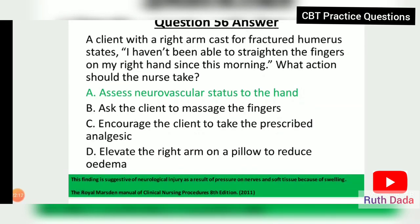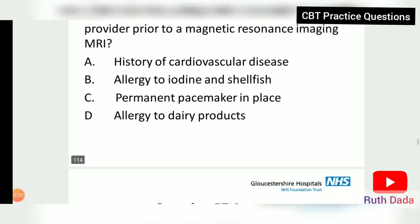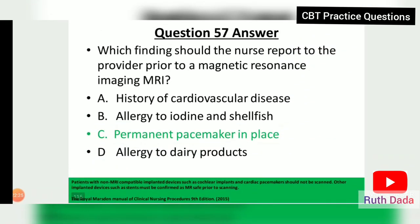Question 57: Which finding should not be reported to the provider prior to an MRI? Having a permanent pacemaker in place is very important to report to the radiographer before an MRI. Patients with non-MRI-compatible implanted devices such as cochlear implants and cardiac pacemakers should not be scanned. Other implanted devices such as stents must be confirmed as MRI safe prior to scanning.